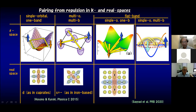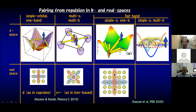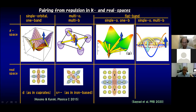This is the multi-orbital multiband case; a typical example is the iron-based superconductors. Again, we've got nesting vectors in yellow, and this is the typical pair exchange process between the electron pockets and the hole pocket. We end up with s-plus-minus pairing in the case of iron-based.